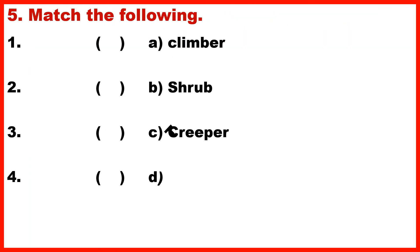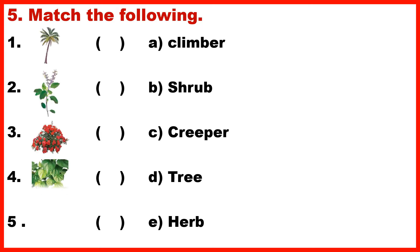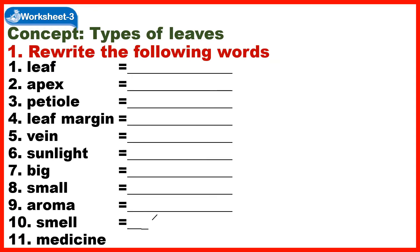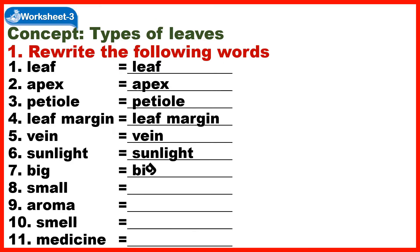Section 5: Match the following. Worksheet 3 Concept: Types of Leaves. Section 1 – Rewrite the following words: Leaf, Apex, Petiole, Leaf Margin, Vein, Sunlight, Big, Small, Aroma, Smell, Medicine.